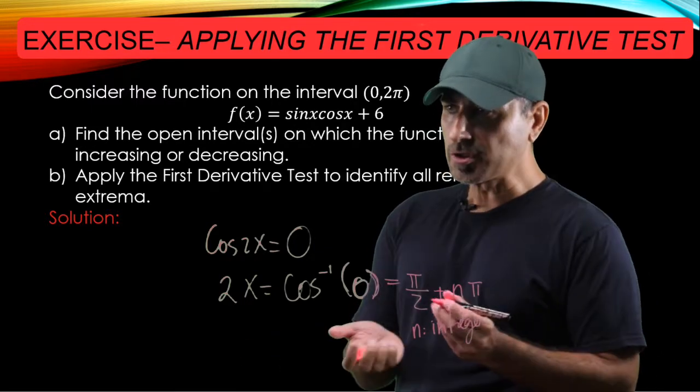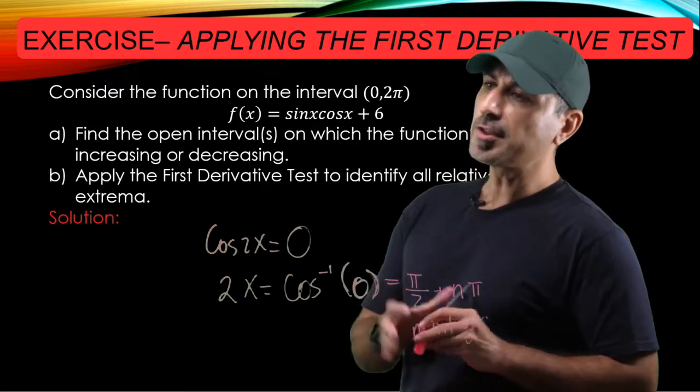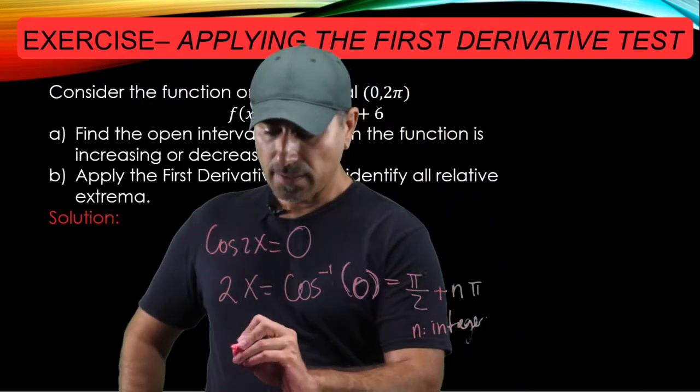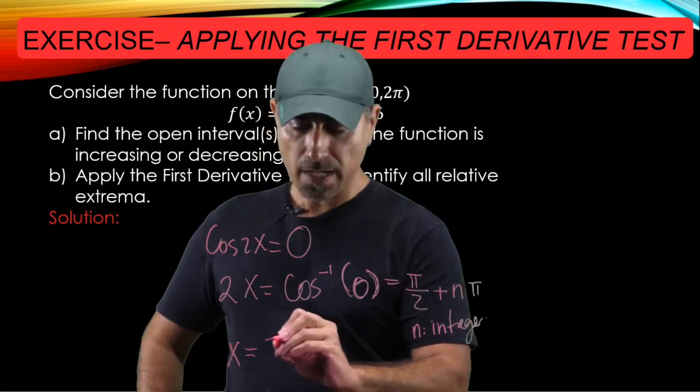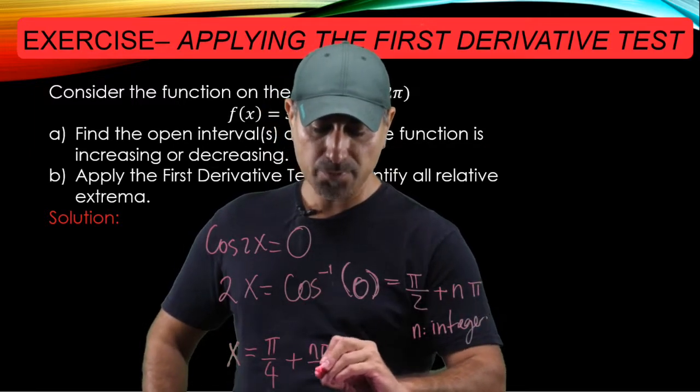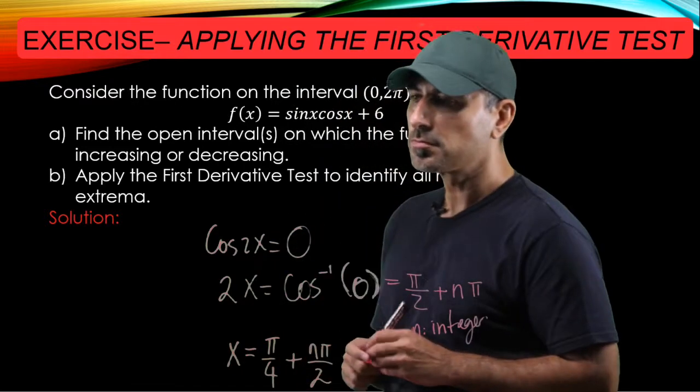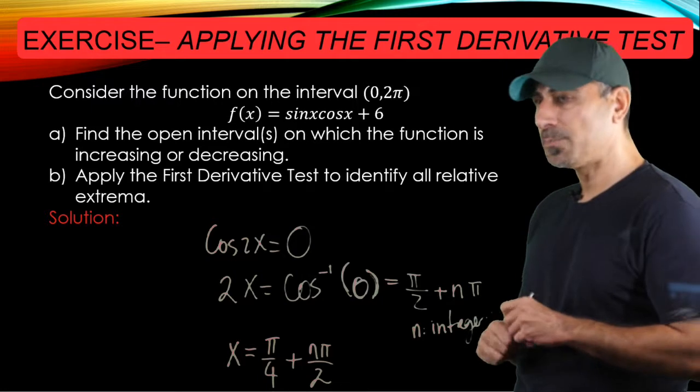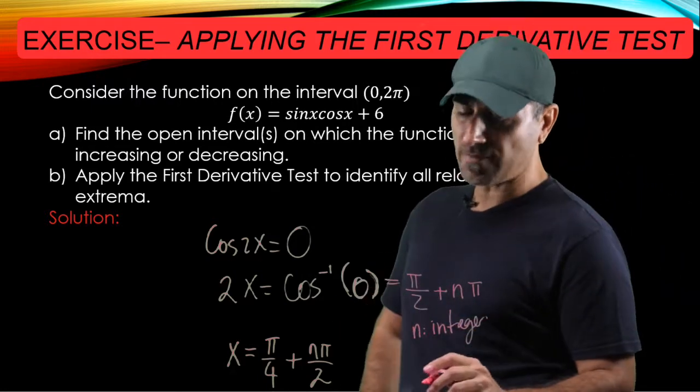So you have multiple solutions here, but we're interested in the interval 0 and 2 pi. So this implies that x should be pi over 4 plus n times pi over 2. And n is an integer here again. So we're in the interval 0 and 2 pi. Why don't we list all the x values?